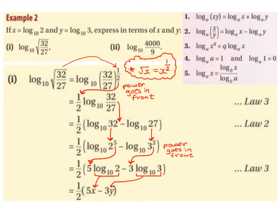So the power goes in front, and this is from Law 3. Law 3 of logs says that log base a of x to the power of q gives us q log base a of x. What you want to do is bring the power — in this case q — in front of the log. So the power of a half comes in front, and we have a half log base 10 of 32/27.